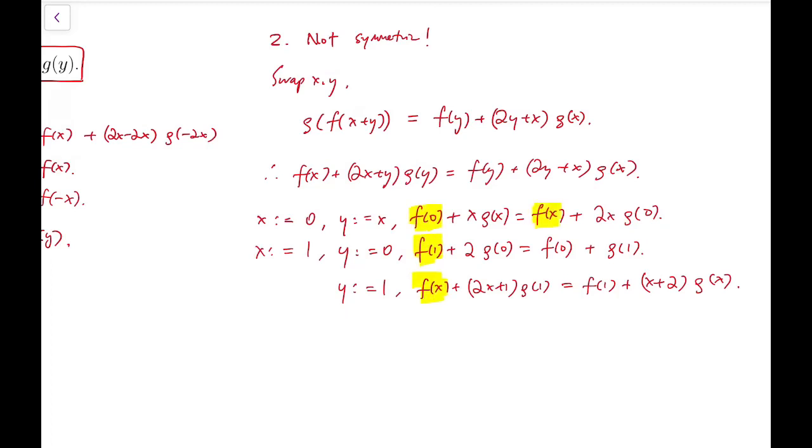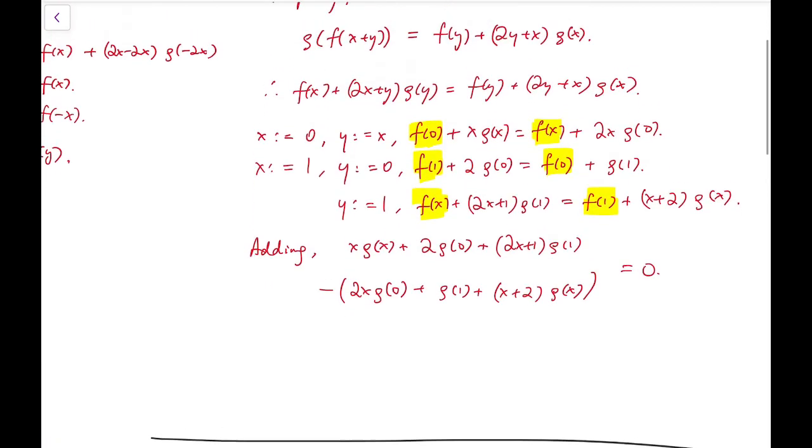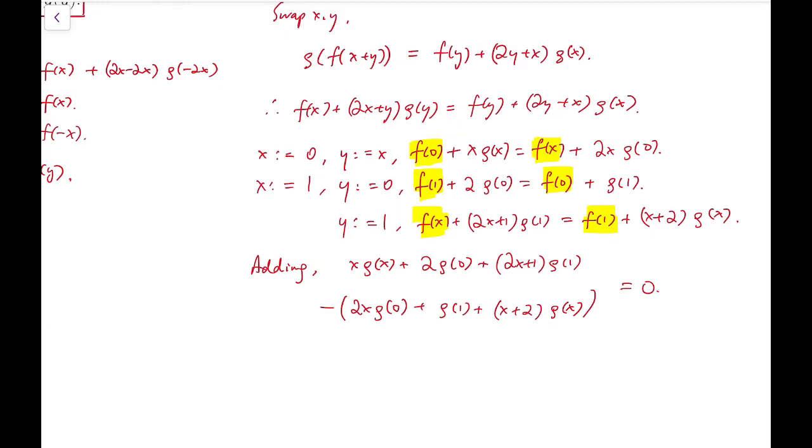After adding, notice that all the terms in yellow should be cancelled out. So adding, what's left is xg(x) + 2g(0) + (2x+1)g(1) minus the entire right-hand side, 2xg(0), g(1), and (x+2)g(x), which equals 0.